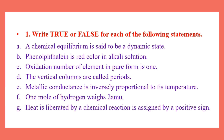Number C: Oxidation number of element in pure form is 1. False — the oxidation number of an element in its pure form is 0.